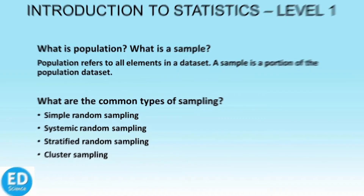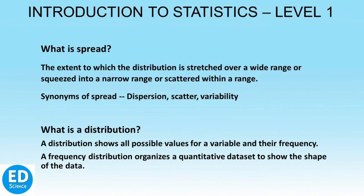Now let us move on to spread. In the English language, spread is just dispersion — like when we spread butter on a slice of bread, we evenly distribute it on the bread. In statistical language too, spread is the extent of distribution: the extent to which the distribution is stretched out over a wide range, squeezed into a narrow range, or scattered within a range. Some people might use the term dispersion, scatter, or variability to refer to spread — these terms statistically have the same meaning.